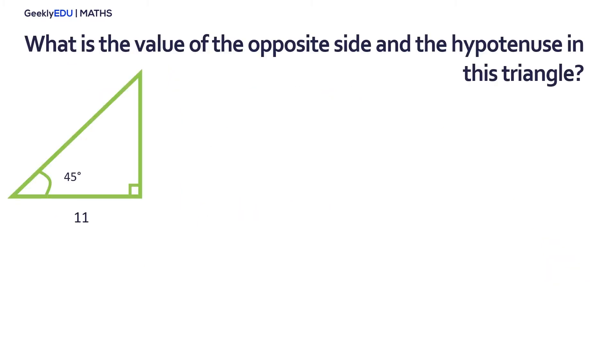Let's solve an example. What is the value of the opposite side and the hypotenuse in this triangle? We know the values of the angle and also the adjacent side. Let's review our functions and see which one we can use in this problem. We can't use the sine function because we don't know the opposite side or the hypotenuse, but we can use the cosine function to get the value of the hypotenuse.